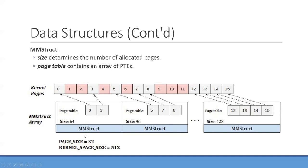Here is an example. For the kernel space, the page size is 32 bytes and the kernel space size is 512 bytes, meaning we have 16 pages available. If one process needs a memory size of 64 bytes, it needs to occupy two pages — pages 0 and 3 in the page table. Similarly, if the needed size is 96 bytes, we need 3 pages: pages 5, 7, and 8.